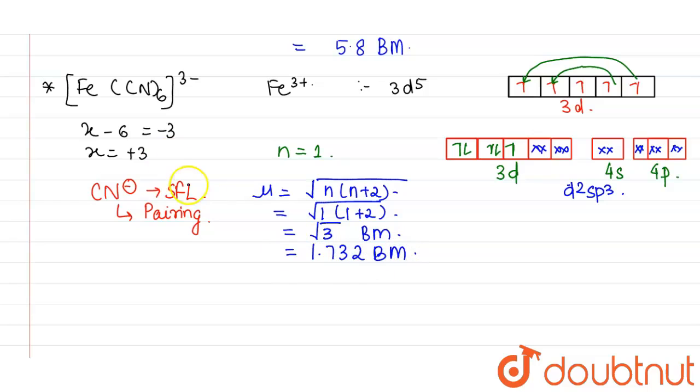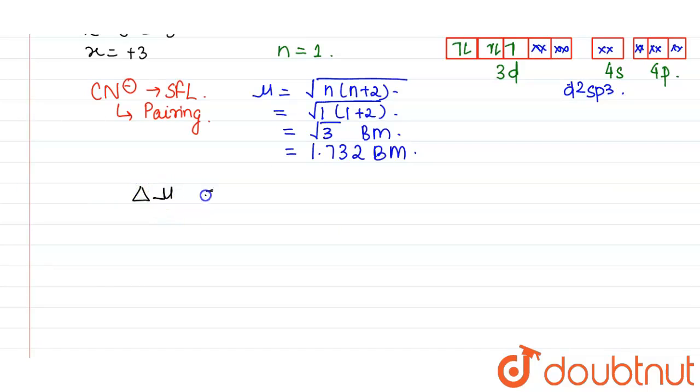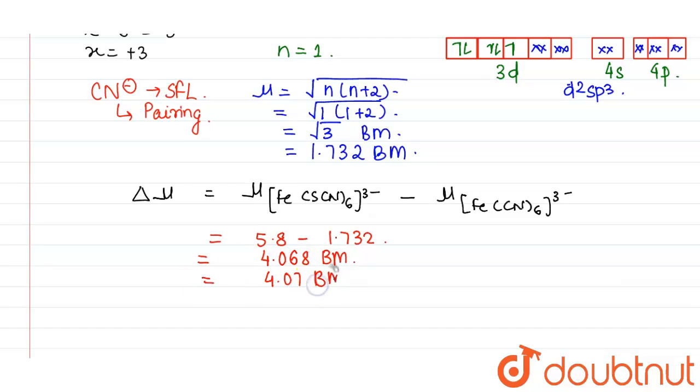We have calculated the magnetic moment of both complexes. We need to calculate difference in magnetic moments: [Fe(SCN)6]3- minus [Fe(CN)6]3-. This value is 5.8 minus 1.732 Bohr magneton, which equals 4.068 BM, approximately 4.07. Since we need an integer value, it will become 4 BM.